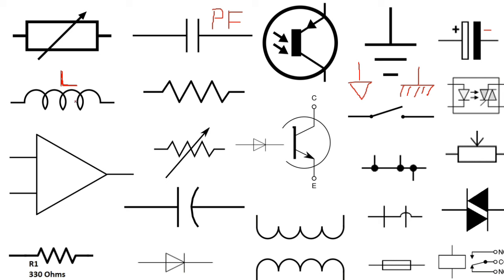This is an inductor or coil. This is the symbol of a resistor. For this one, this is a variable resistor, and this is a normal resistor. This is a US symbol, used in the US. But for this other symbol, this is an international symbol.